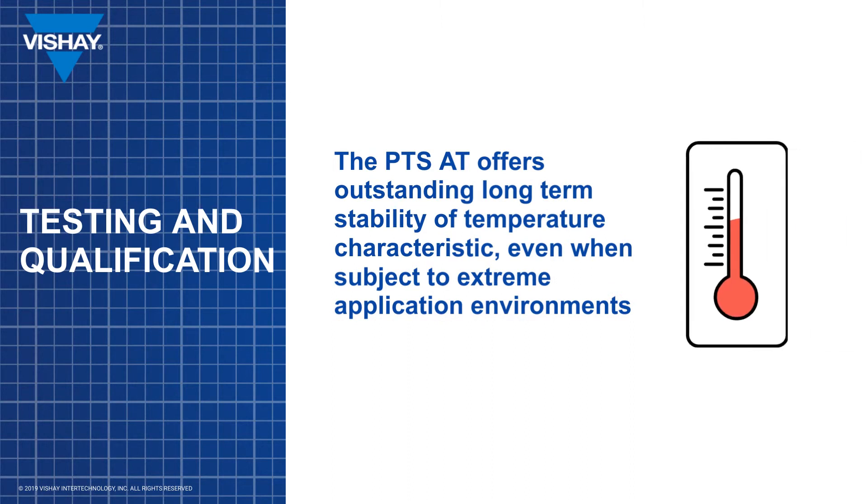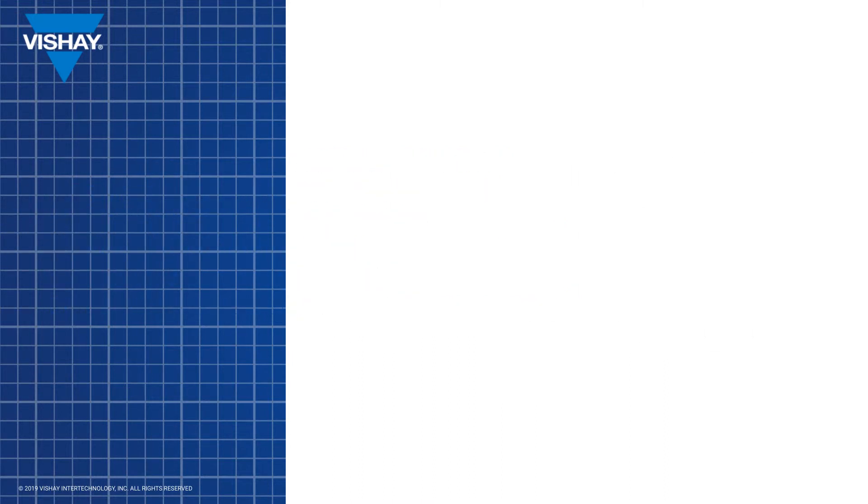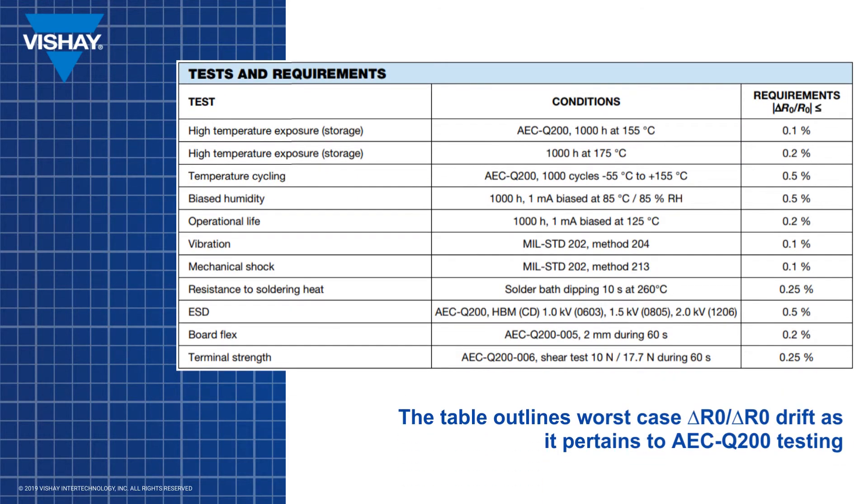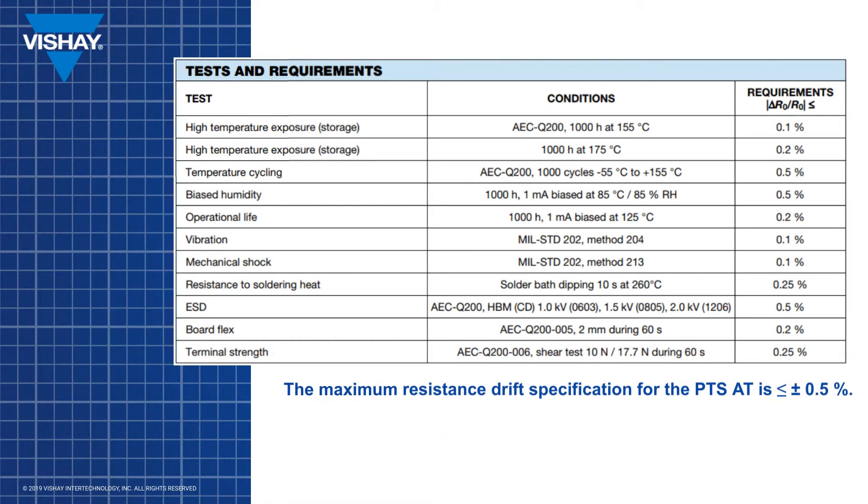The highly controlled platinum thin film manufacturing process of the PTS-AT assures exceptional stability of temperature characteristics, resulting in long-term reliable operation even under harsh environment. The table above outlines the AECQ 200 test standard conditions for each test and the resulting resistance drift requirements for PTS-AT. The maximum resistance drift specification for the PTS-AT is less than plus or minus 0.5%. The worst-case drift can be attributed to applications with extreme thermal cycling and humidity.